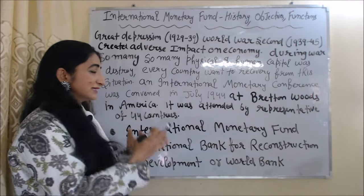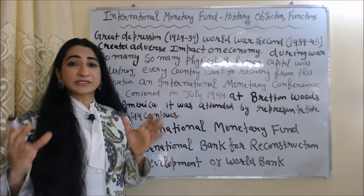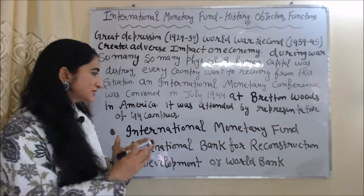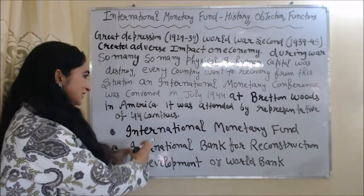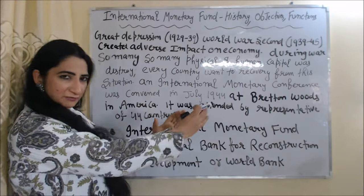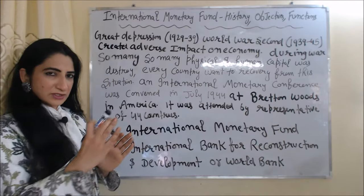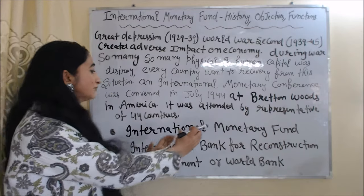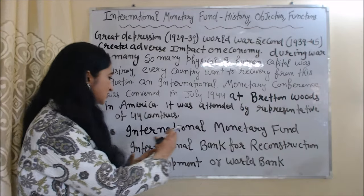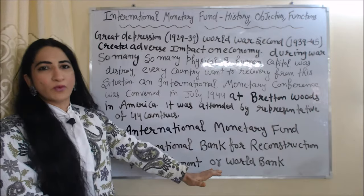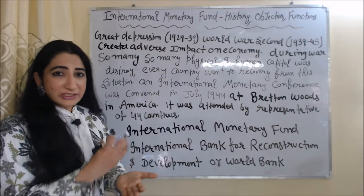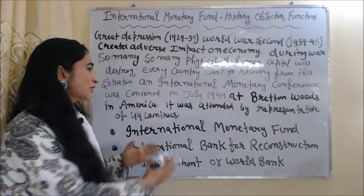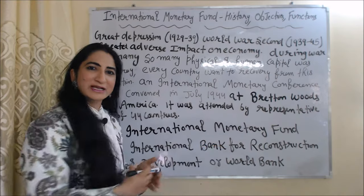During the conference, they decided to set up two institutions. The name of the first institution is International Monetary Fund and the name of the second institution is International Bank for Reconstruction and Development, or we can say the World Bank. In today's video, we will only discuss about International Monetary Fund.